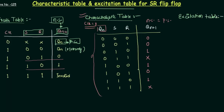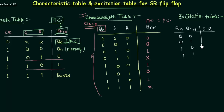In the excitation table, the two inputs are QN and QN+1, and the two outputs are S and R. So we have to find out the values for S and R depending upon the values of QN and QN+1. The characteristic table is determined from the truth table, and the excitation table is determined from the characteristic table. That's why the truth table is the basic block for all these tables.